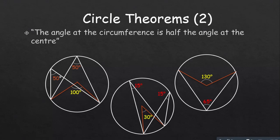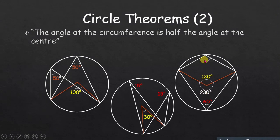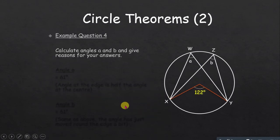The angles marked in red are always subtended from the center. If the arc subtends 360 degrees total and the center angle on one side is 130 degrees, then the reflex angle at the center is 230 degrees. Half of 230 is 115 degrees — that is the angle at the circumference for that arc.